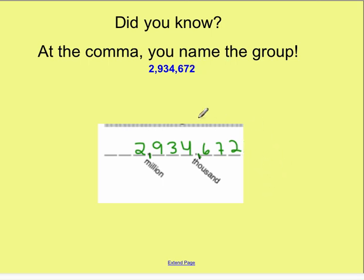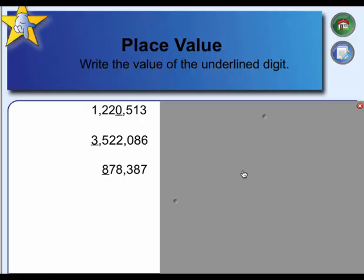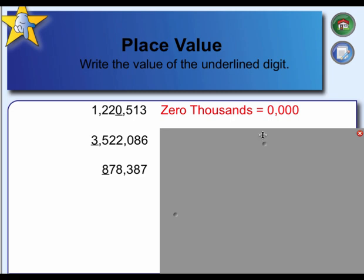Notice there's no comma after the two, but sometimes there is something else and we'll get there later. So let's take a look at some examples where we want to write the value of the digit that we have underlined. In my first example, I have the zero underlined. I would read this number: one million, two hundred twenty thousand, five hundred thirteen. Since I have my zero underlined, I know that's in the thousands place. So this would be the thousands place, but I don't have any value there because I have a zero — so I would say zero thousands.